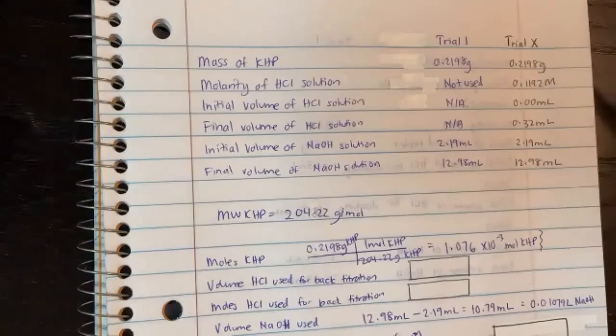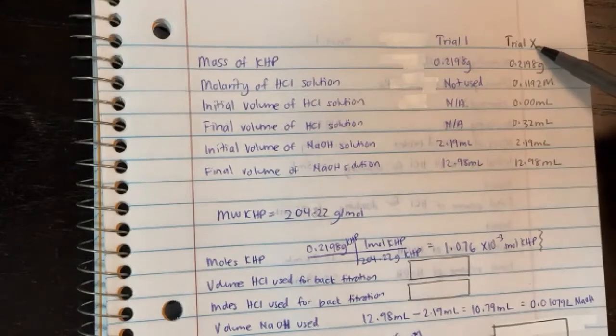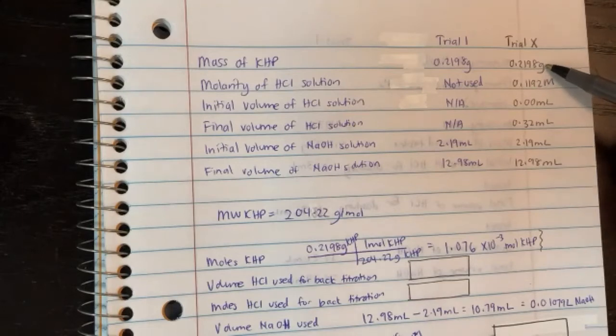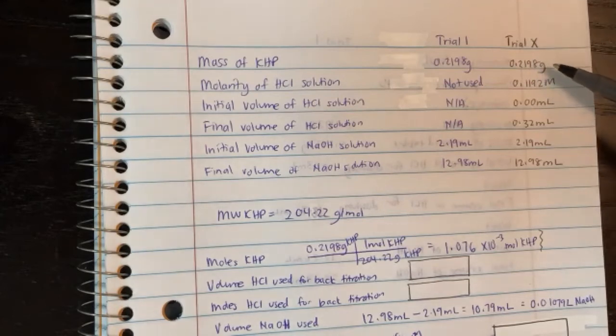So in this video here, I'm going to show you what the difference is if we had some back titration happening and how the calculations would look differently. So this is just a hypothetical situation. I just call it trial X since this is not part of your data. Let's go ahead and work on these boxes that we need to fill up.